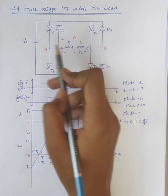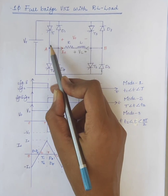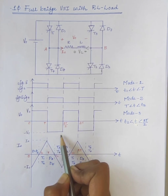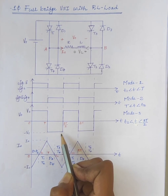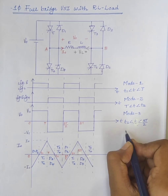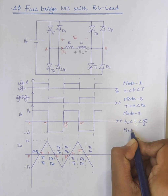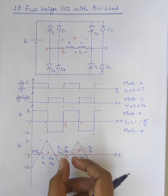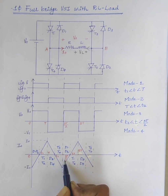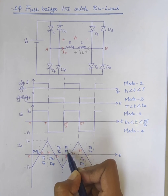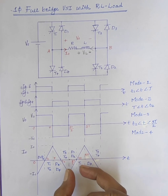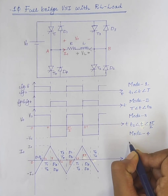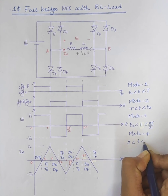So what about the output voltage? Here B is positive with respect to A. Therefore the output voltage is minus Vs. Next is Mode 4, for the period 3T by 2 less than T less than T3, where D1 and D2 conduct. This period is the same as the initial freewheeling period, therefore Mode 4 corresponds to 0 less than T less than T1.